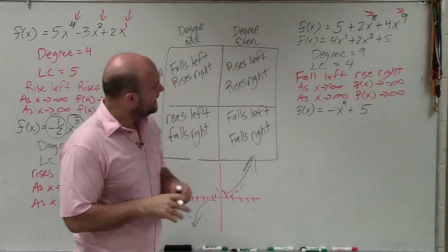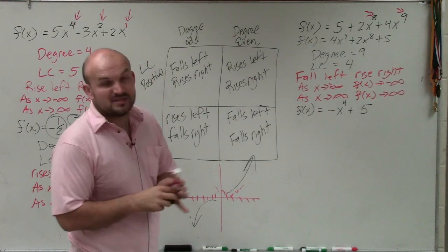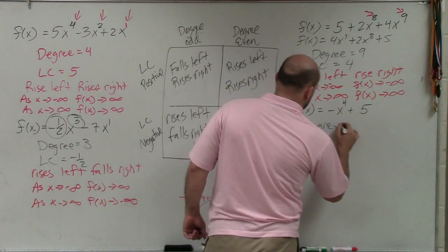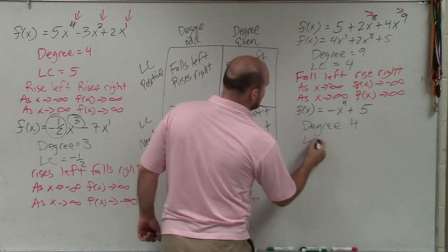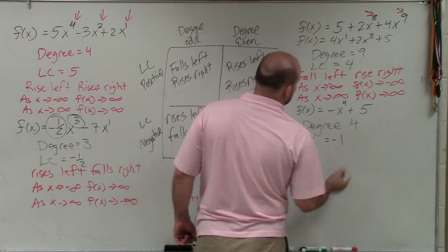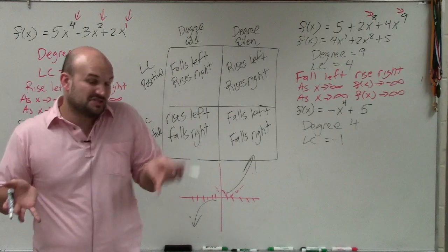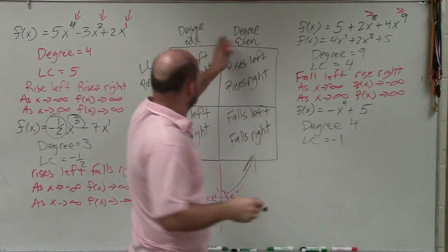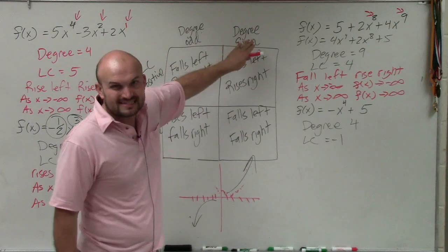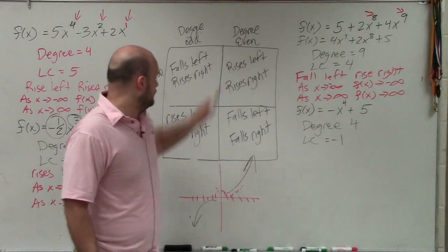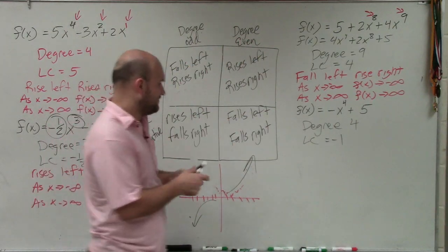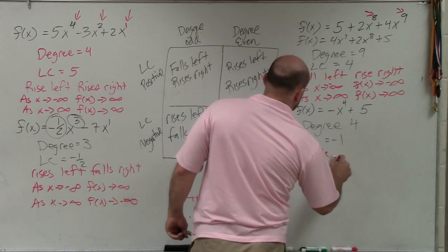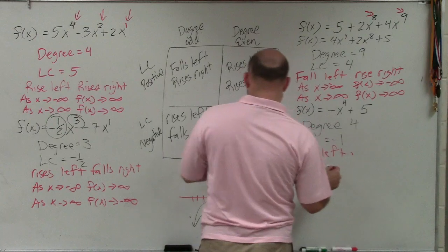The last example is negative x to the fourth plus 5, which is already in descending order. The degree is 4, and the leading coefficient is negative 1 — because there's just a negative sign in front, which means it's negative 1. The degree is even and the leading coefficient is negative, so my graph falls left and falls right.